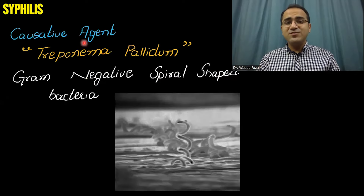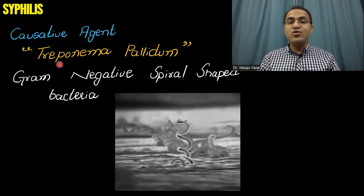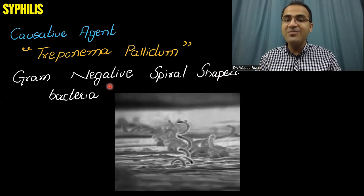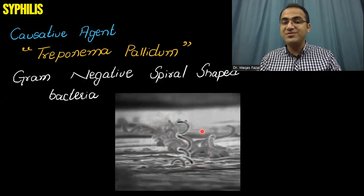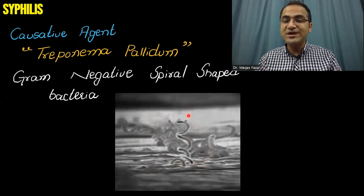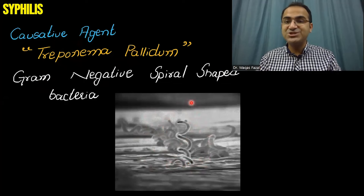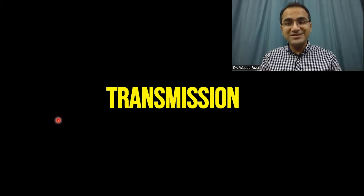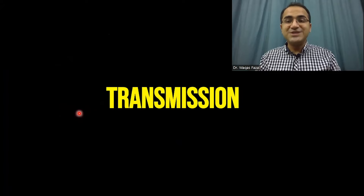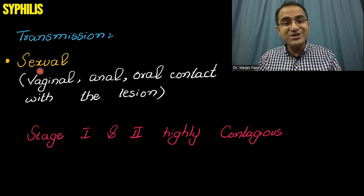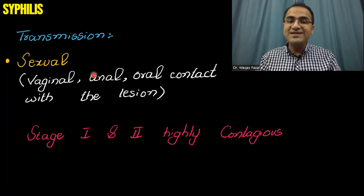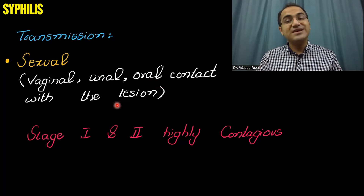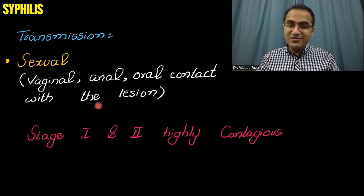Syphilis is caused by bacteria known as Treponema pallidum. Treponema pallidum is a gram-negative spiral-shaped bacteria — you can appreciate that it is a spiral-shaped bacteria in the picture. Coming to the transmission of Treponema pallidum: it is transmitted mainly through sexual routes — vaginal, anal, or oral contact with the lesion can transmit syphilis infection.